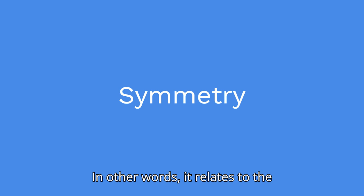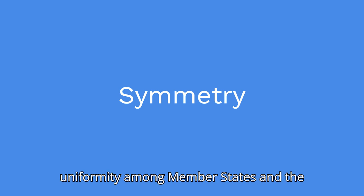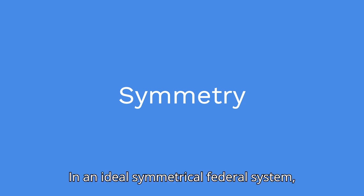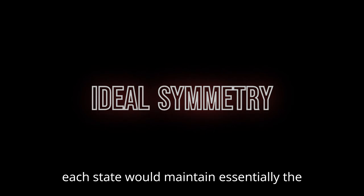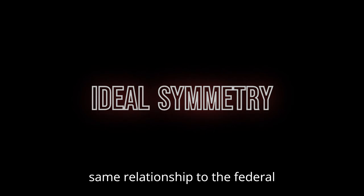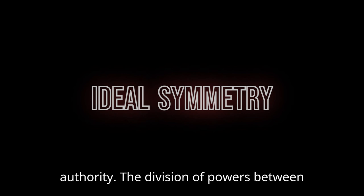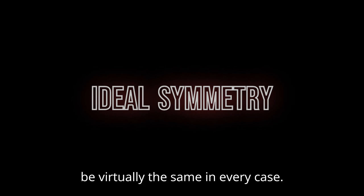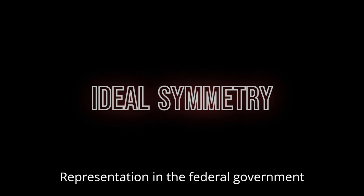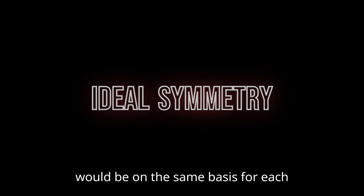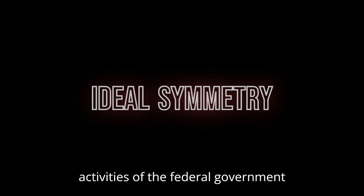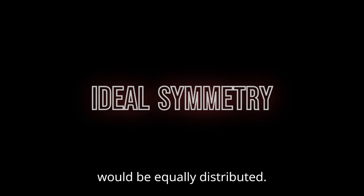In other words, symmetry relates to the uniformity among member states in the pattern of these relationships within a federal system. In an ideal symmetrical federal system, each state would maintain essentially the same relationship to the federal authority. The division of powers between the federal and state governments would be virtually the same in every case. Representation in the federal government would be on the same basis for each component polity, and support of the activities of the federal government would be equally distributed.